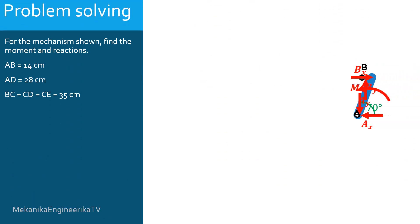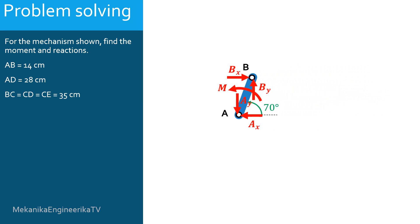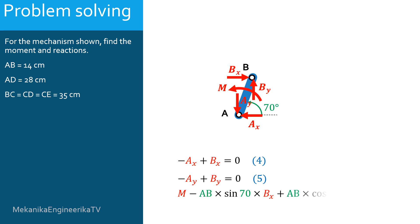For bar AB, horizontal equilibrium gives: minus AX plus BX equals 0 — equation 4. Vertical equilibrium gives: minus AY plus BY equals 0 — equation 5. Moment equilibrium around point A gives: M minus AB·sin(70)·BX plus AB·cos(70)·BY equals 0 — equation 6.